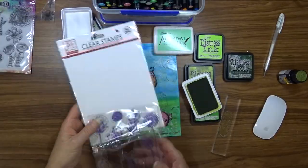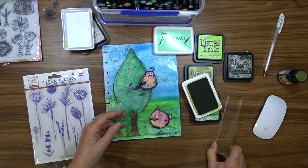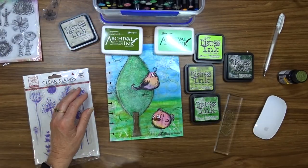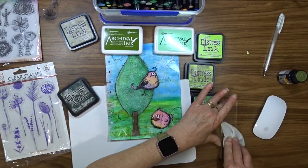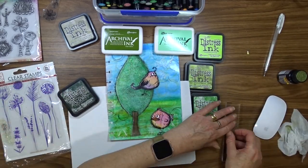To add some detail to the foreground of the page I'm going to add some grasses to the bottom of the layout. I'm going to use some Dylusions Small Leaf Stamp, Sullivan's Leaf and Stem Stamps.